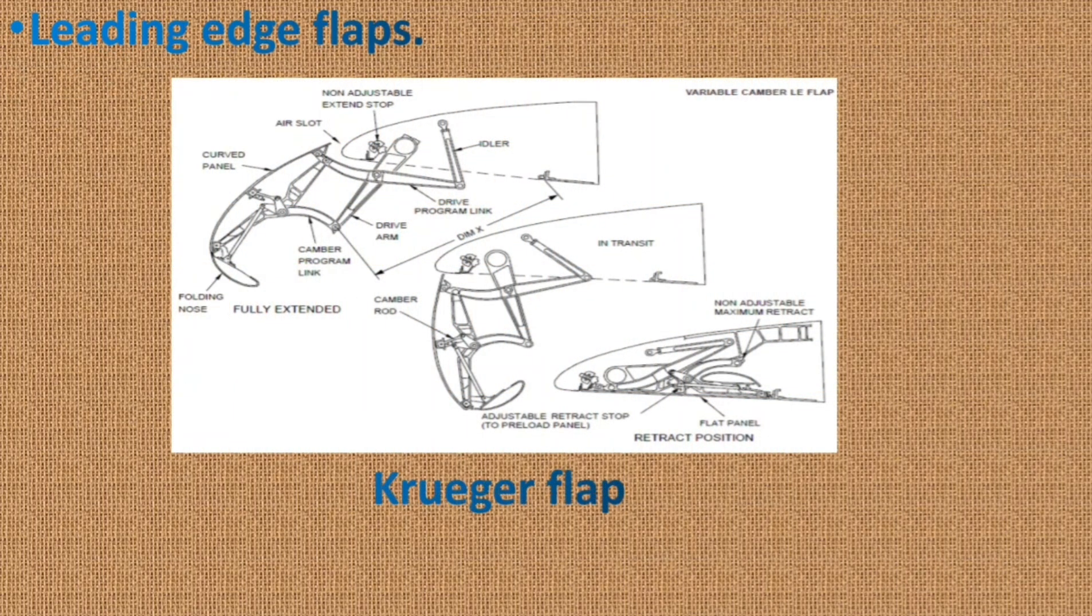Leading edge flap or Kruger flap. A Kruger flap is a type of high lift device that is deployed from the lower side of a wing around the leading edge. It is also known as a leading edge flap or nose flap. A Kruger flap is typically cut out of the cruise wing geometry without affecting the wing surface near and above the leading edge. Therefore, unlike a conventional slat, a Kruger flap is stored in the lower side of the wing.